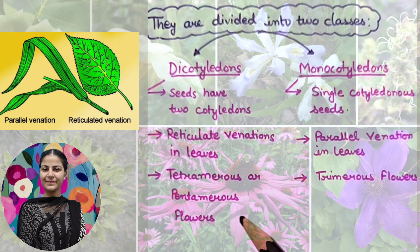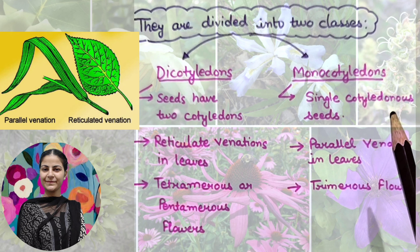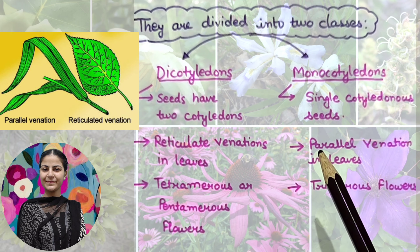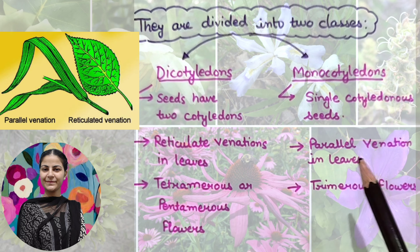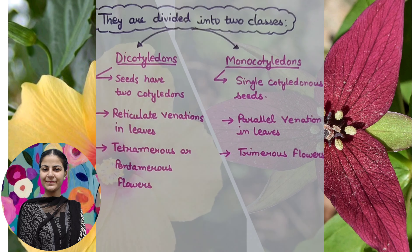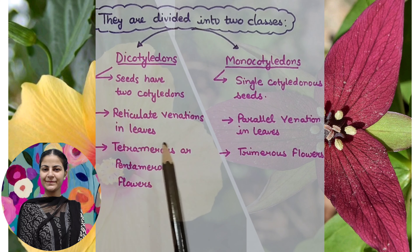In dicotyledonous plants, the leaf venation is called reticulate venation. In monocotyledonous plants, the leaves have parallel venation — the veins run parallel to each other.